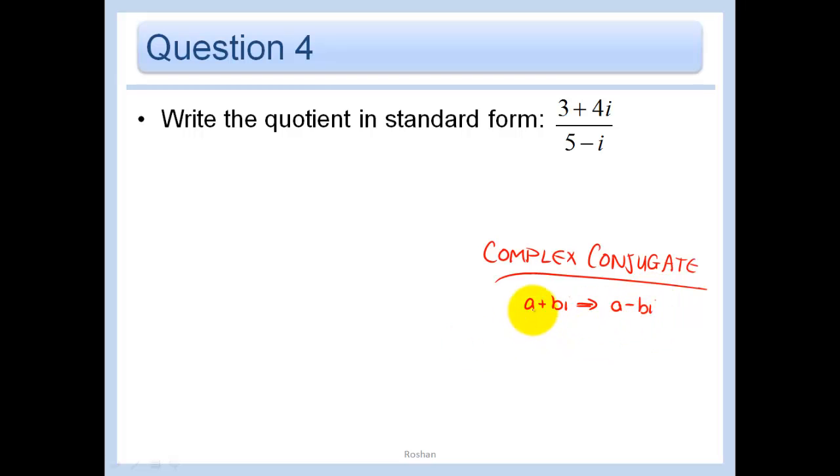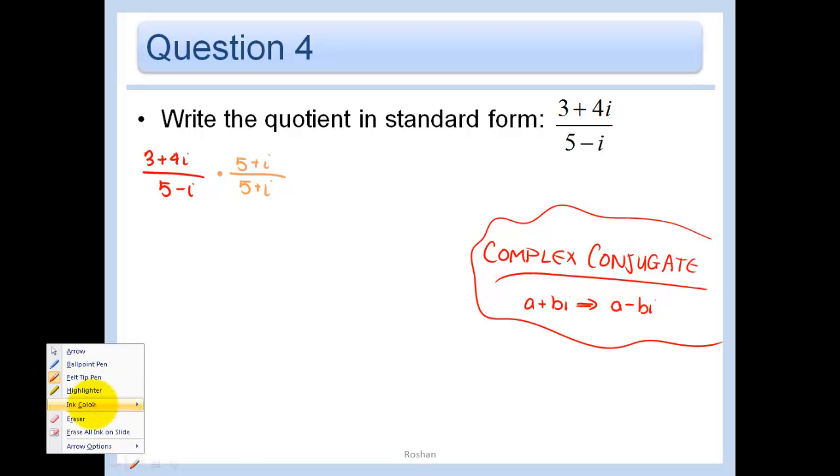Because again, when I multiply the two together, I'm going to get rid of that middle term. And since the last now, when I multiply those together, I'll get that i squared. That just becomes negative 1. And so I get rid of my i. So I'm going to do that in this example here. So 3 plus 4i over 5 minus i. I'm just going to multiply by 1 in the form of 5 plus i over 5 plus i. Because again, I want the outer and the inner to cancel out. So that would be my complex conjugate there.